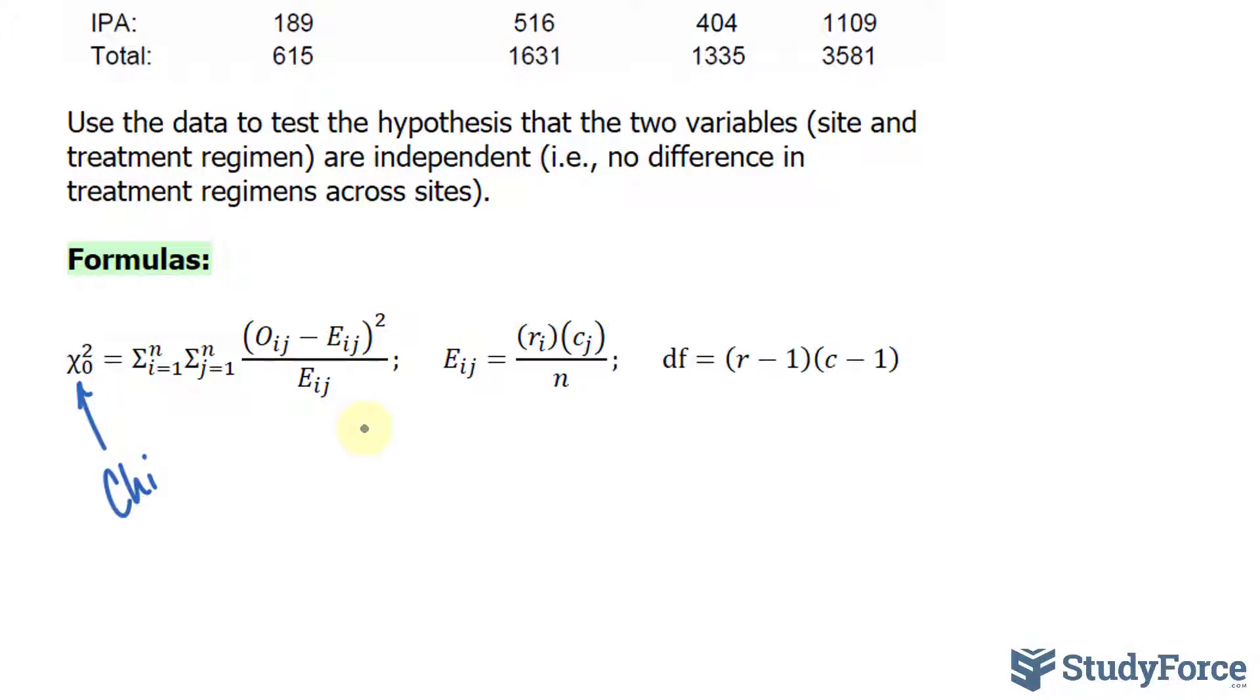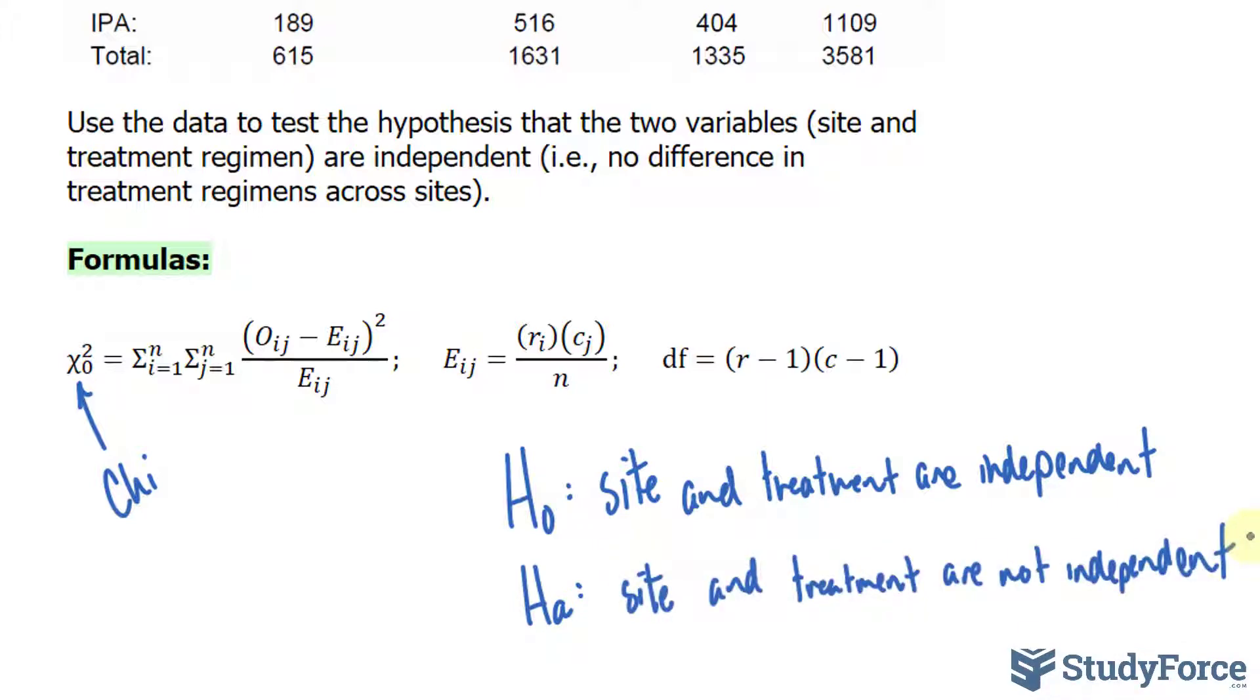Our null hypothesis will be that the treatment and the site are independent, meaning there's no relationship between the two. Our alternative hypothesis will be the opposite of this, that the site and treatment are not independent. Another way to understand this is that they are related to each other.